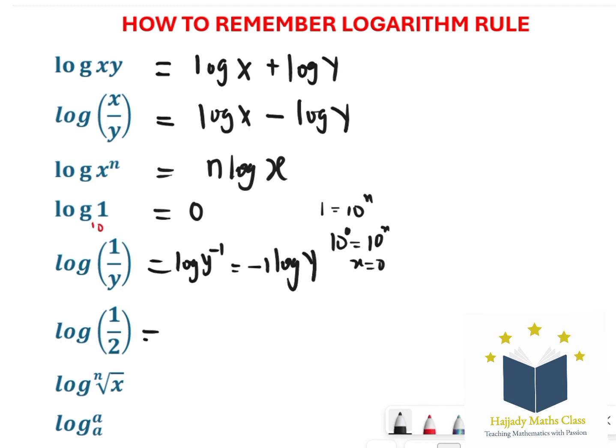Using the same rule for this, you're going to have -log 2. That's the application of the fifth rule.